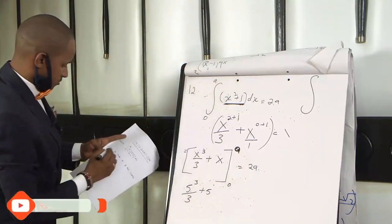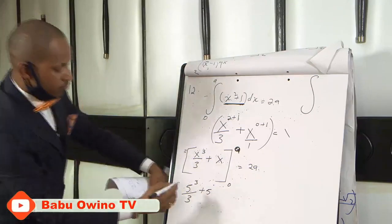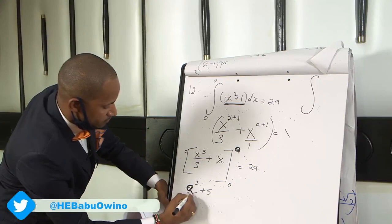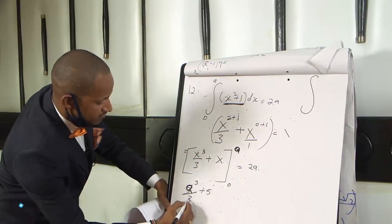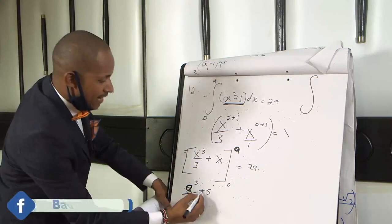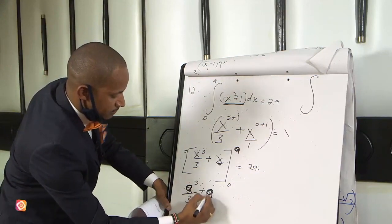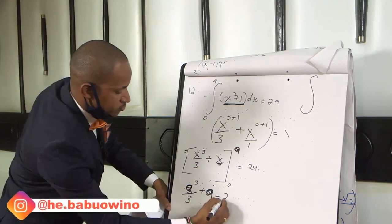A and 0. So we are finding the value of A. So where there is x you write A. So it is A cubed, A raised to power 3 divided by 3 plus this is A. Not 5, A. Equals to 2A.